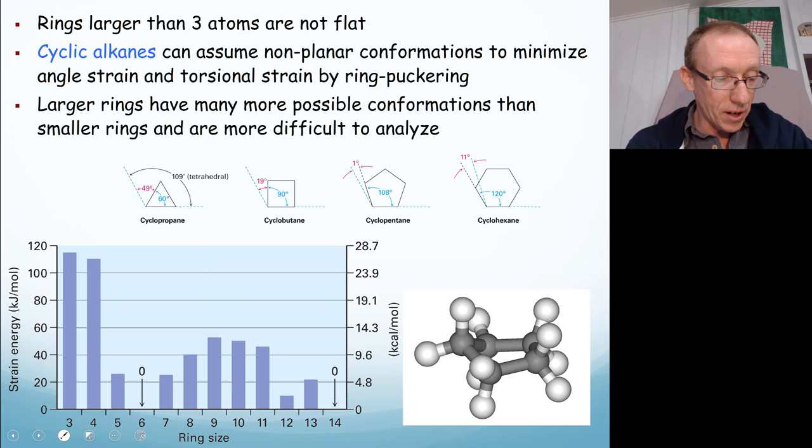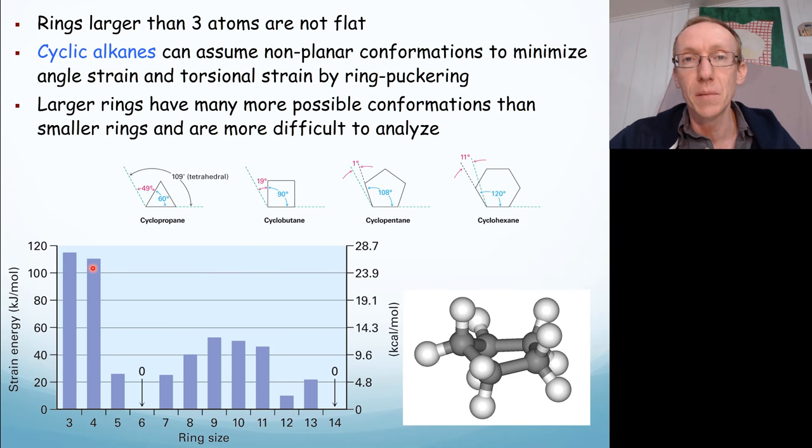So interestingly, the strain in a three-membered ring, cyclopropane, is not that much different to the strain in a four-membered ring. That's largely because even though the bond angles are a bit better in a four-membered ring than a three-membered ring, there's now four carbon atoms that are involved in bonding arrangements that aren't ideal, so it's just a matter of numbers.